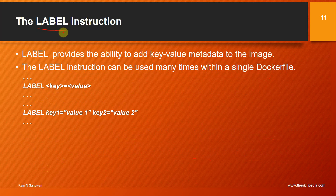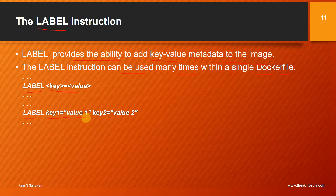The LABEL instruction provides the ability to add key-value metadata to the image. It can be used multiple times within a single Dockerfile. For example: LABEL key=value or LABEL key1=value1 key2=value2.